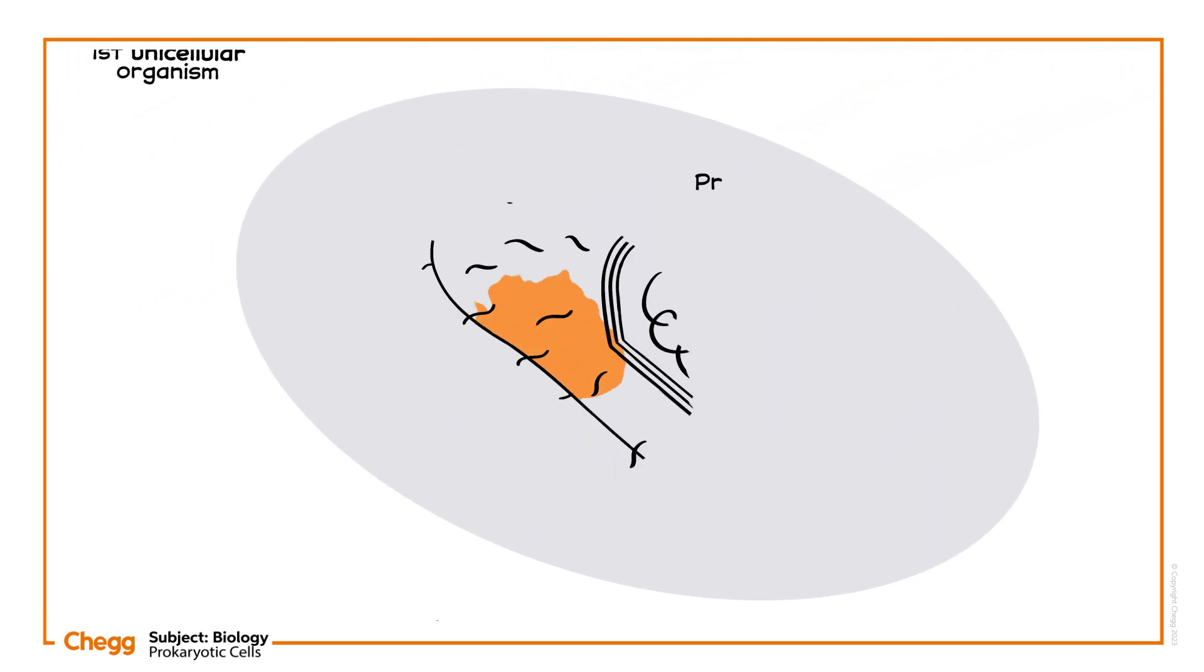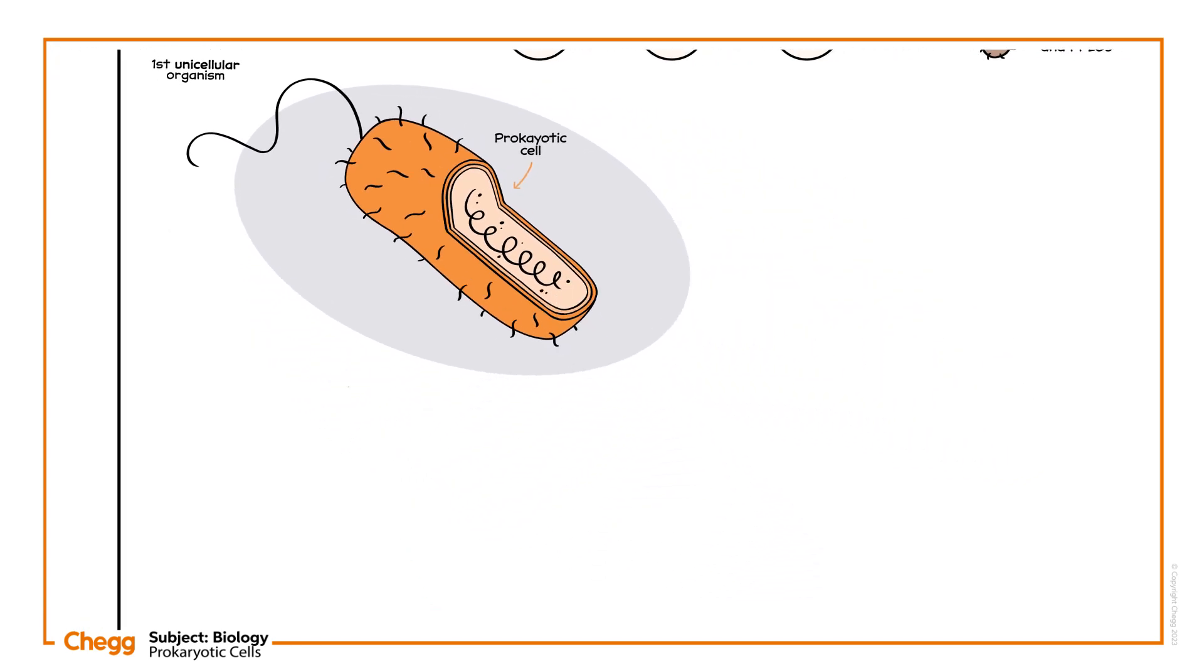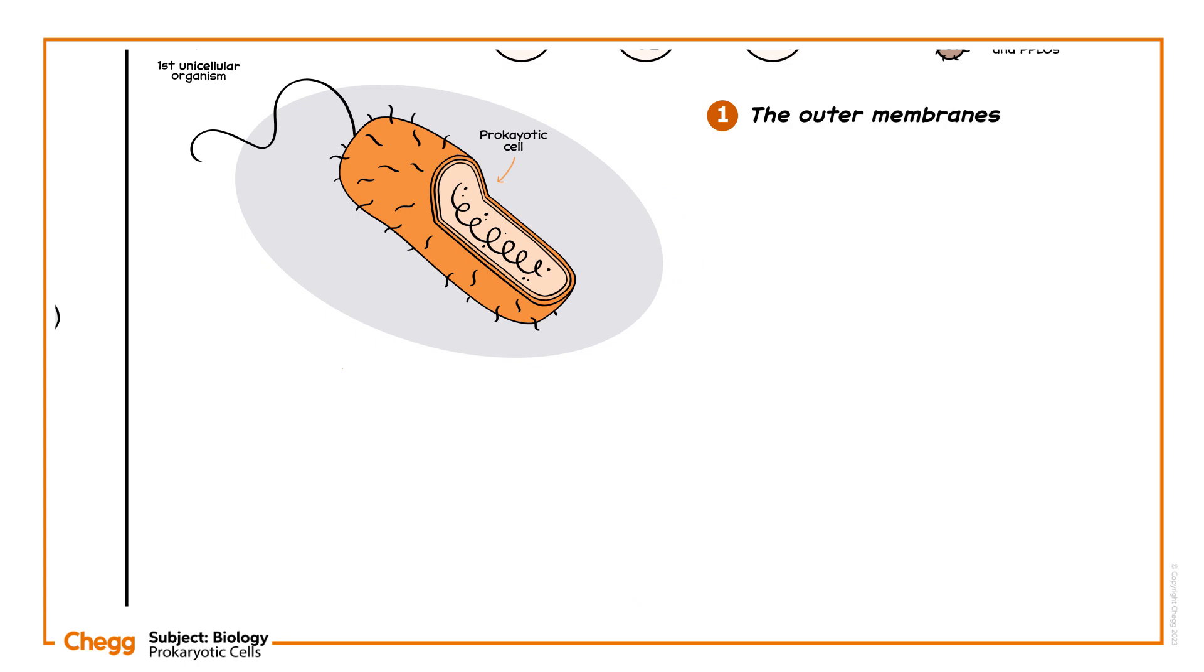Here's a typical prokaryotic cell. Let me give you a tour. First, we'll look at the outer membranes and associated structures, then the structures outside the membranes, and finally we'll introduce the structures inside the cell membranes.